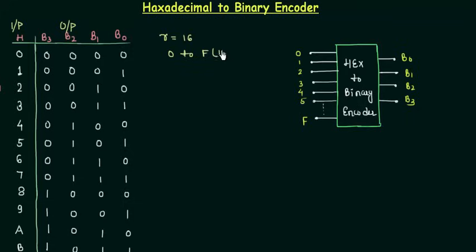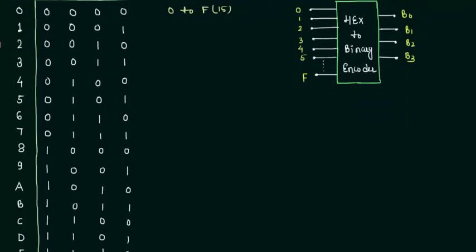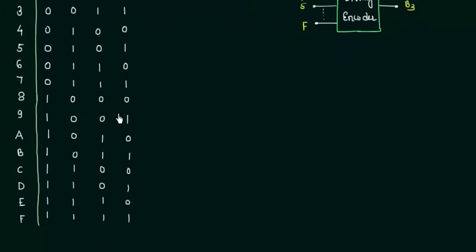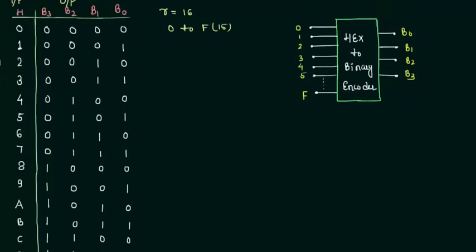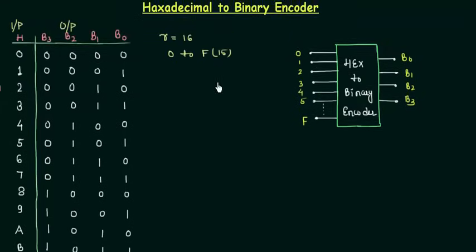15 is written as F in hexadecimal number system and if you are in this encoders definitely you have already studied about the number system and you know that 10 is written as A, 11 as B, 12 as C, 13 as D, 14 as E and 15 as F in case of hexadecimal number system.